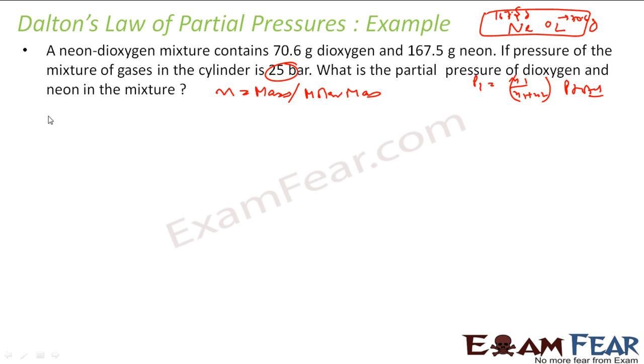So let us find the number of moles for O2. My number of moles for O2—n1 will be what? What is the mass of oxygen? 70.6 grams. 70.6 divided by what is the molar mass? Molar mass will be 32 grams per mole. So if you solve this, you get 2.21 mole. So this will be n1 for oxygen.